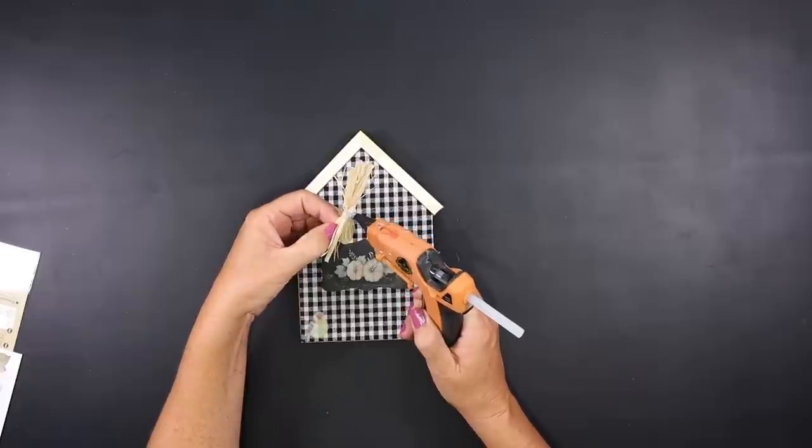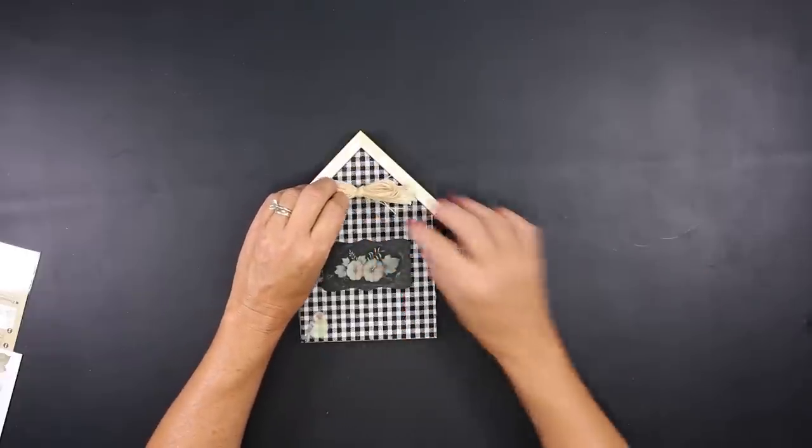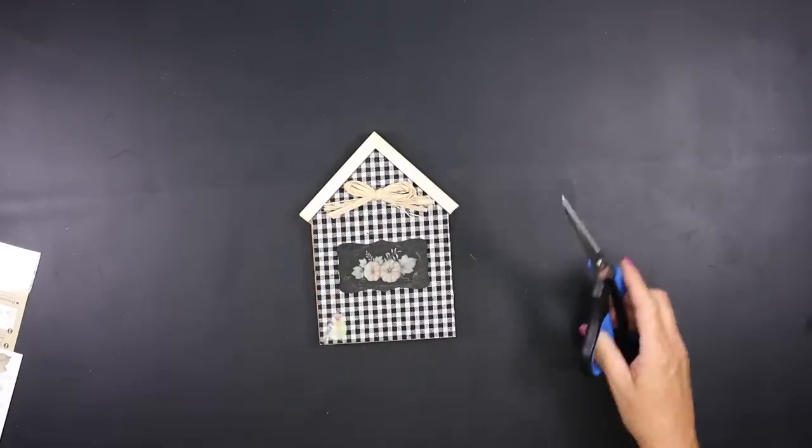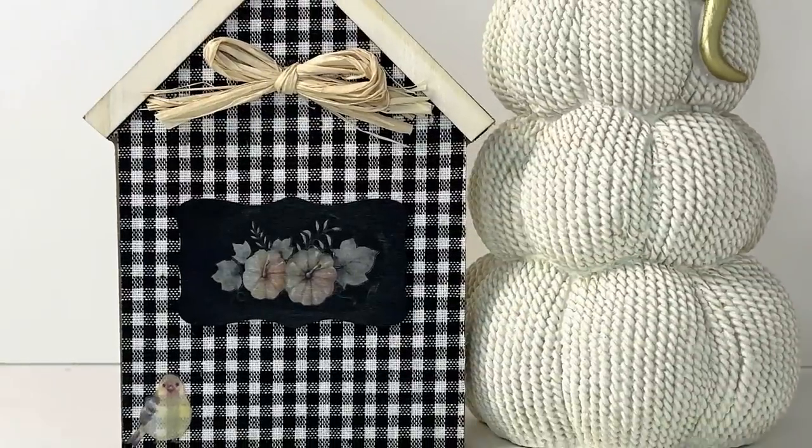I'm going to hot glue a raffia bow that I took off of a previous project. I love that it matches the roof and this project is complete.